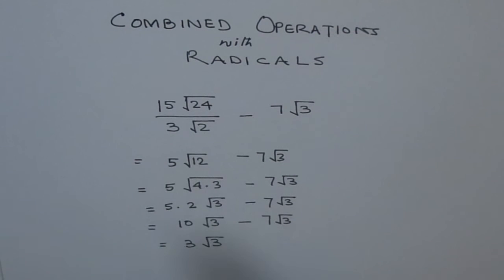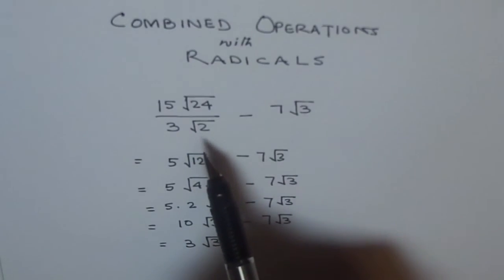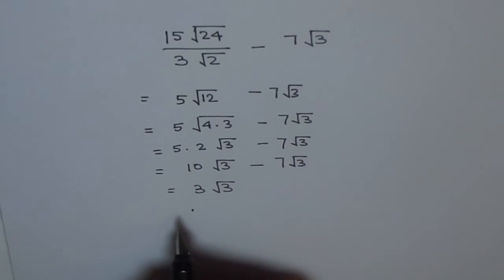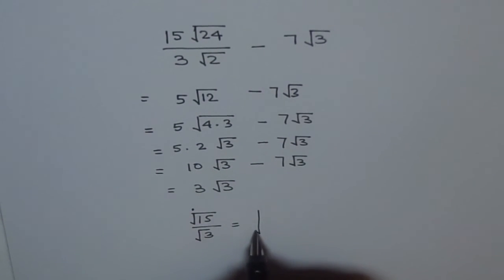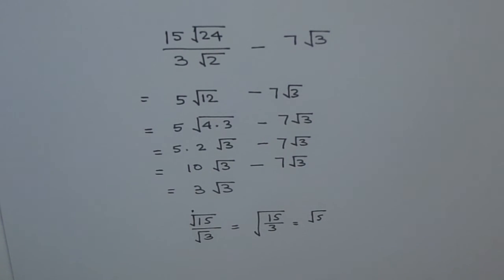Remember that we cannot mix and match. So you can divide radical by radical. For example if you have radical 15 over radical 3, it is like 15 divided by 3, which could be radical 5. That is permitted. So that is what we used here.